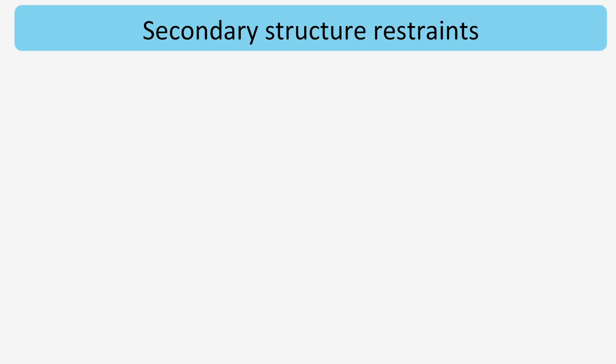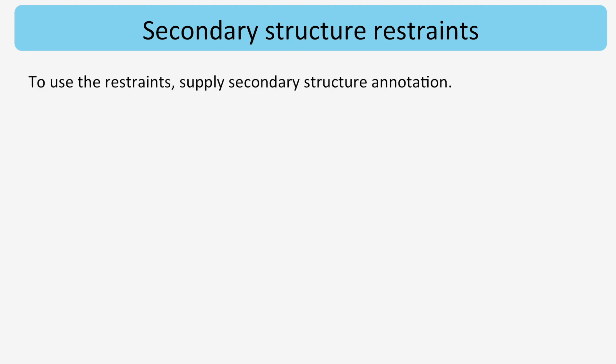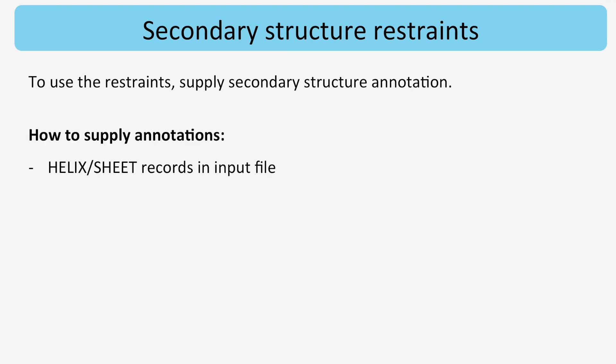To apply secondary structure restraints, it is necessary to supply an annotation which tells the program which residues belong to a secondary structure element. Annotations can be supplied in several ways. First, they can be stored as helix and sheet records in the model file.